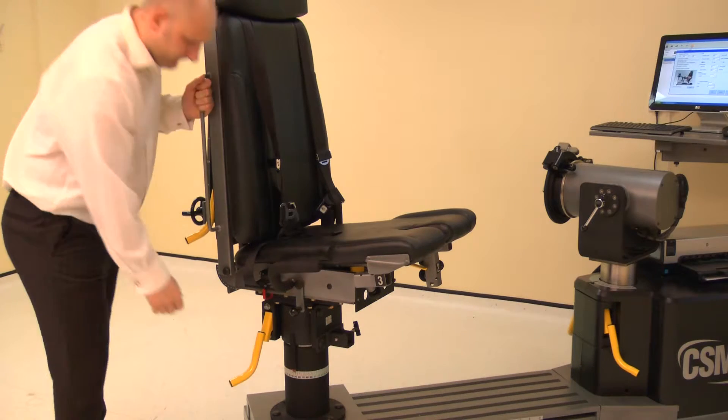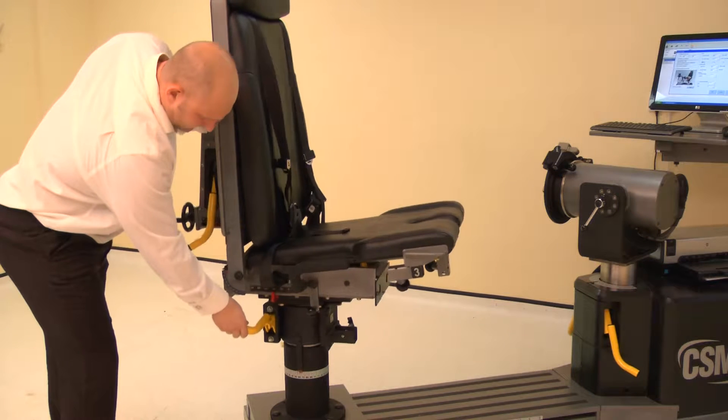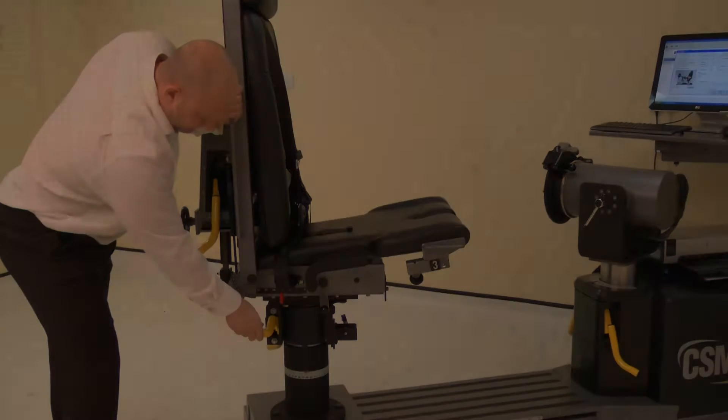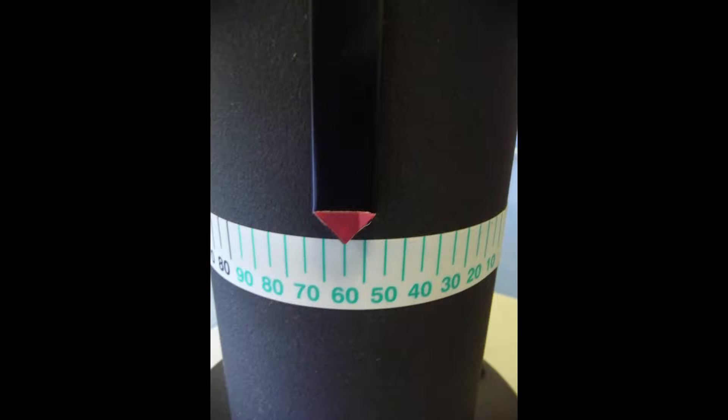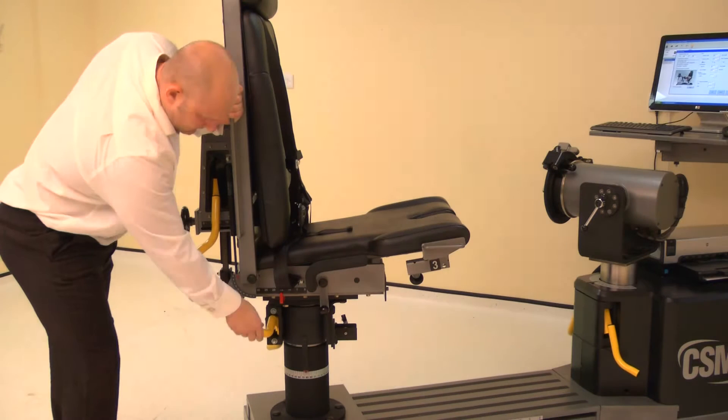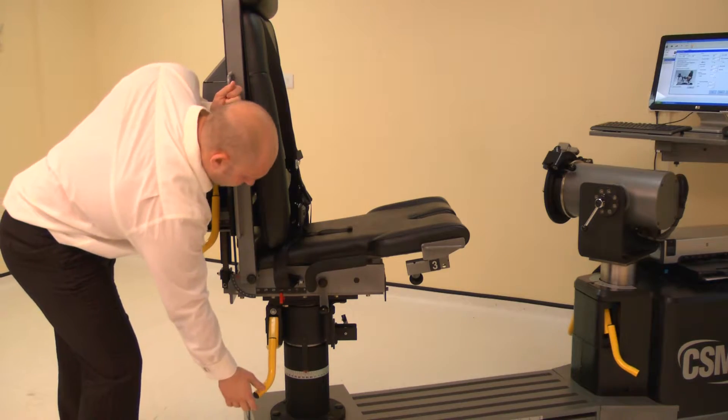Now adjust the chair rotation. Lift a locking handle and rotate the chair. Rotate the chair to 60 degrees on the green scale. Ensure both locking handles are pushed down to secure.